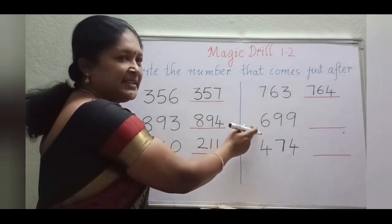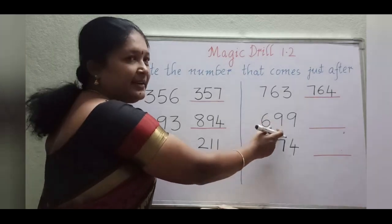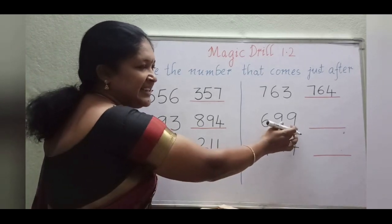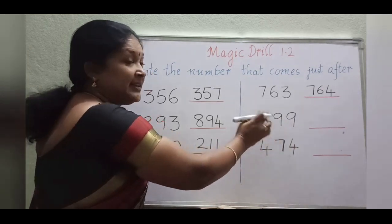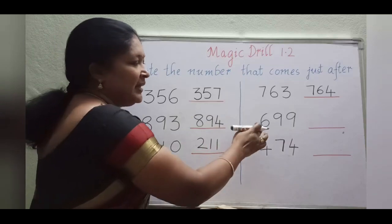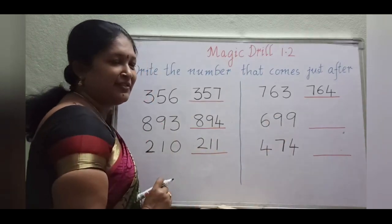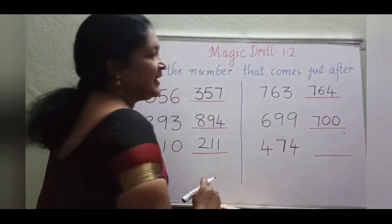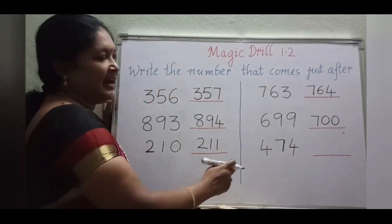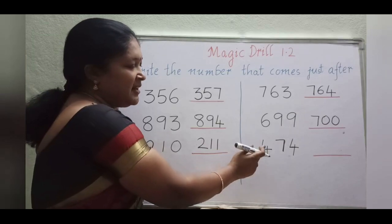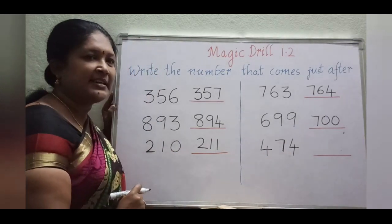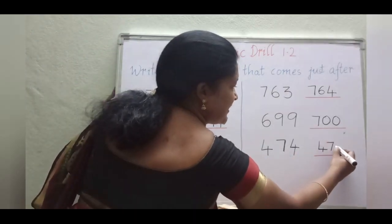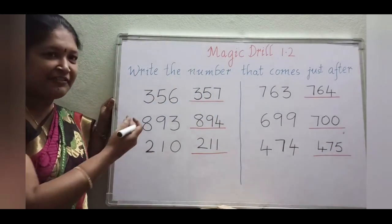And now the next number: 699. So 699 after which number will come? See children, in the 1's place 9 is there, and in the 10's and 1's together 99 is there. So 699 after, 700 will come — here 3 digits are changing. And see the next number: 474. So 474 after which number will come? 475. So these are the after numbers, children.